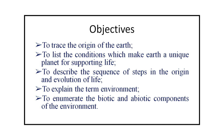During this program you shall learn how the Earth originated, how it got its own environment, and in what ways human beings have been using environmental resources for their welfare and development. The objectives are: to trace the origin of the Earth; to list the conditions which made Earth a unique planet for supporting life; to describe the sequence of steps in the origin and evolution of life; to explain the term environment; and to enumerate the biotic and abiotic components of the environment.